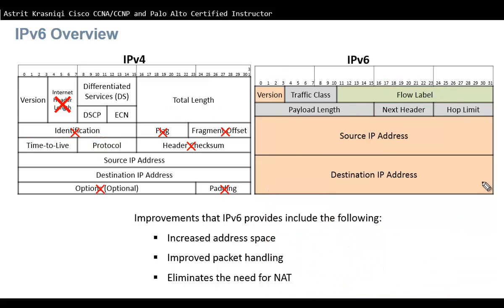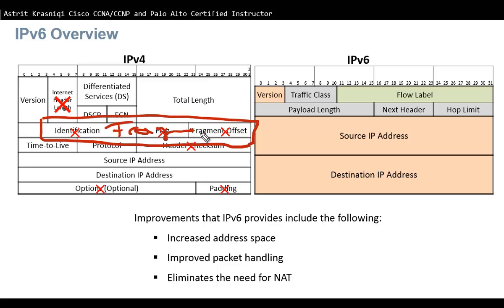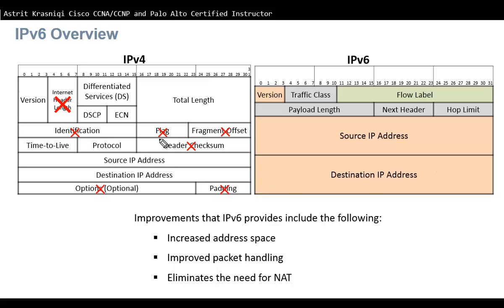There are three fields in IPv4 that are gone in IPv6 because they all relate to fragmentation. Since IPv6 does not handle fragmentation in the same way, those fields are removed. Also, IPv6 does not have a header checksum field.